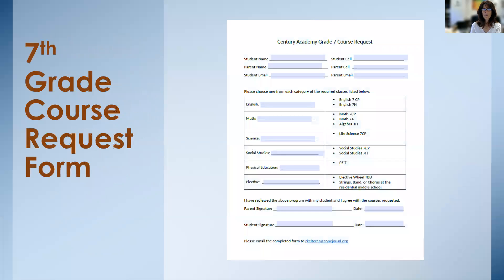This is the form that you will be receiving to complete your course request. Students can choose between the different English courses, math courses, and Life Science 7 CP. We also have Social Studies, PE, and elective. You can go ahead and email that back to me or to your advisory teacher. Let me know if you have any questions — I'm happy to set up a meeting with you to go over your course requests. Thanks again, and I look forward to receiving your course requests and getting you into your classes for next year.